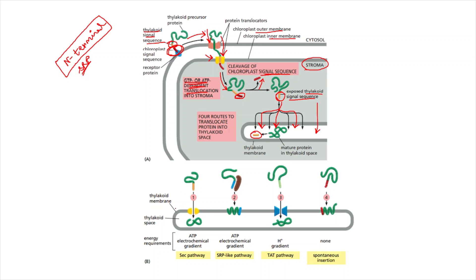Translocation from the stroma to the thylakoid can take place in four different ways. Number one is the Sec pathway, called so because protein translocators that are homologues of the Sec protein are involved. This is an ATP dependent pathway. Number two is the SRP-like pathway, which uses protein translocators that are homologues of SRP, and by using these homologues and ATP the chloroplast protein can be translocated from the stroma into the thylakoid.